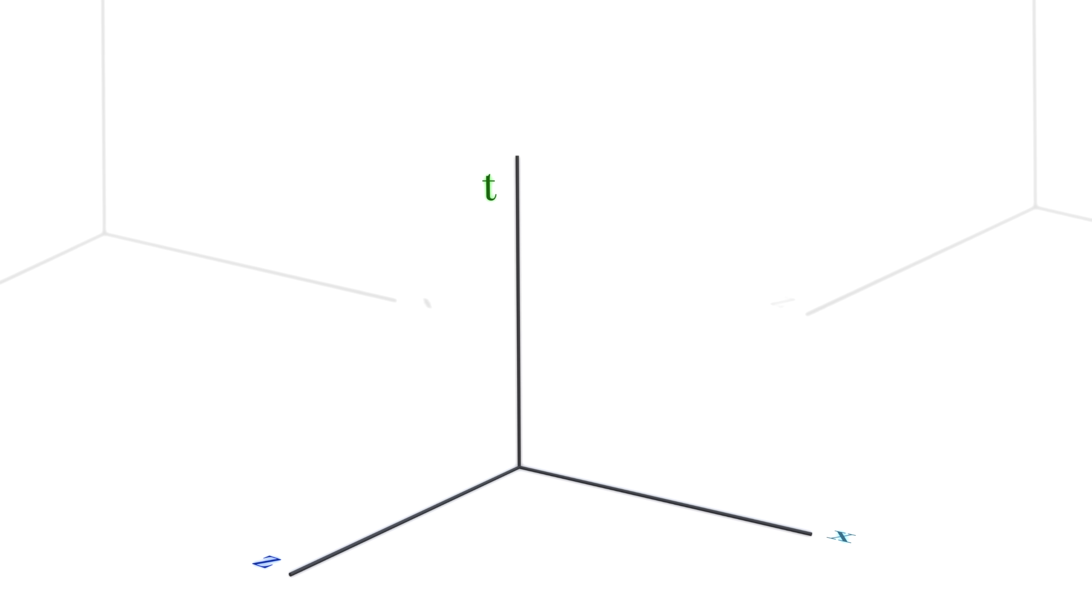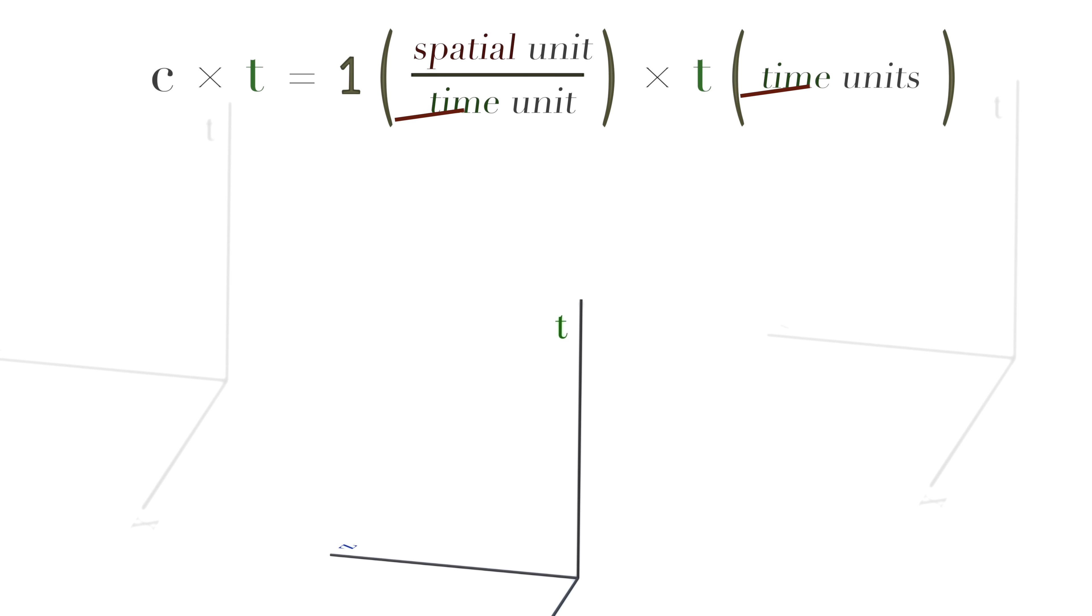However, this doesn't mean that this axis is being converted into a temporal dimension. Rather, that we're simply choosing new units wherein the velocity value of c is set to one. That is, one spatial unit per time unit, which means that the resultant unit is always still a unit of distance.